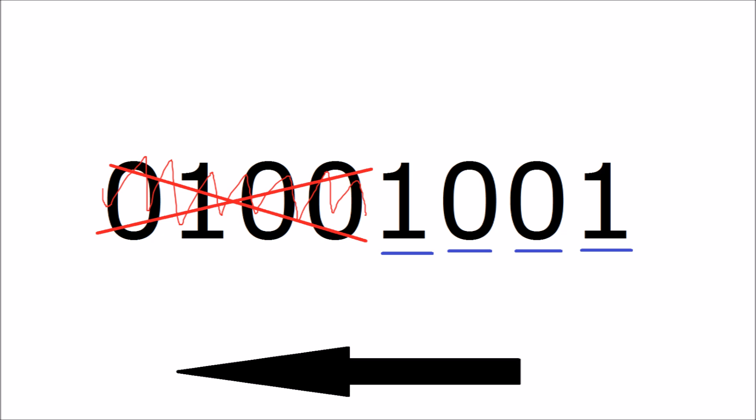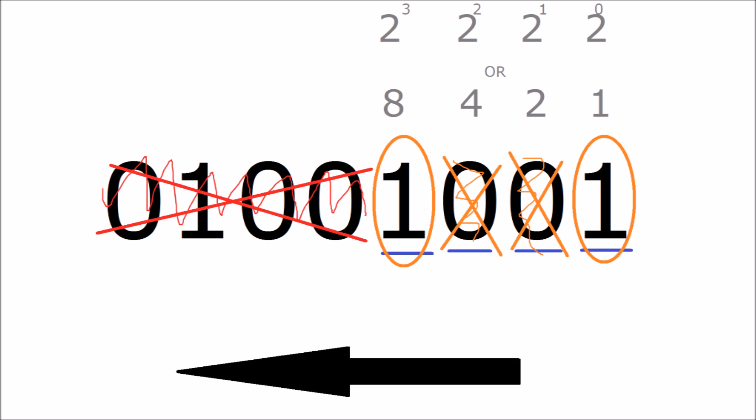When the first bit is turned on, or is a one, it represents a one. When the second bit is on, it represents a two. When the third bit is on, it represents a four. And when the fourth bit is on, it represents an eight.